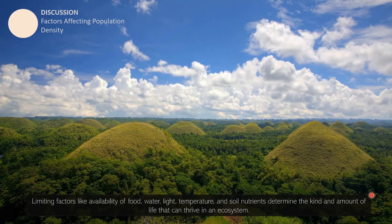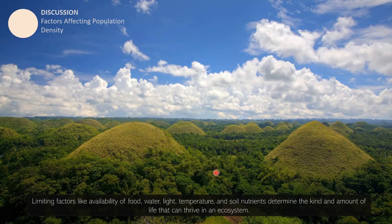The last factor affecting population density is limiting factors. These include the availability of food — if food sources in a place are scarce for a particular type of organism, you can expect the population density of that species to be lower. Water is even more fundamental, as most species need water to survive.